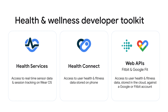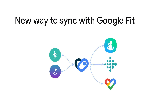Our toolkit for building health and wellness apps on Android is expanding. Health Services provides access to real-time sensor data on Wear OS in a power-efficient way — we introduced this last year and it's now in beta. Check out the Wear OS technical session for this year's updates. HealthConnect allows access to health and wellness data stored on your phone. Web APIs for both Fitbit and Google Fit allow access to health and wellness data stored in the cloud. HealthConnect becomes the new way for Android apps to sync data with Google Fit on device, which means the existing Google Fit Android APIs will be deprecated. We will continue to invest in the web APIs. We know this migration will take some time, and that's why developers using Google Fit Android APIs today should visit the documentation for guidance.